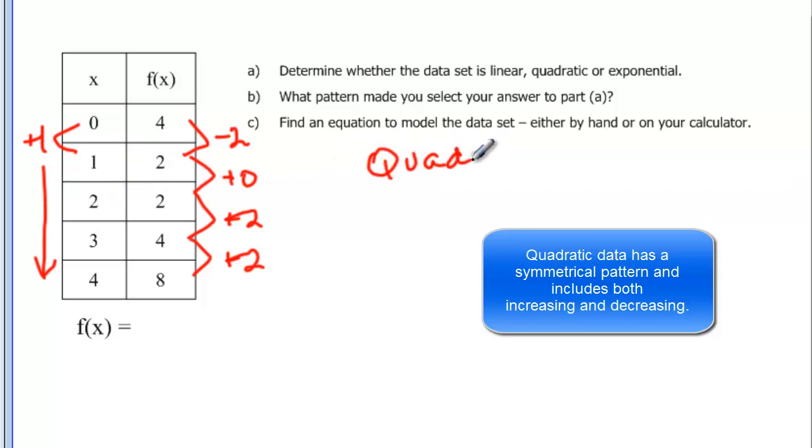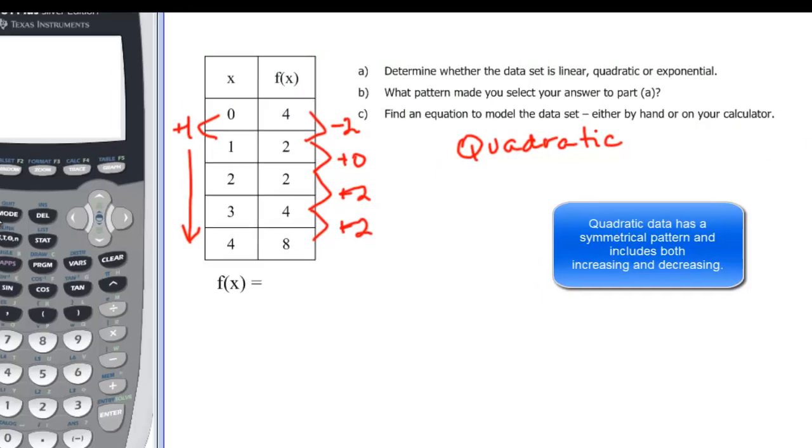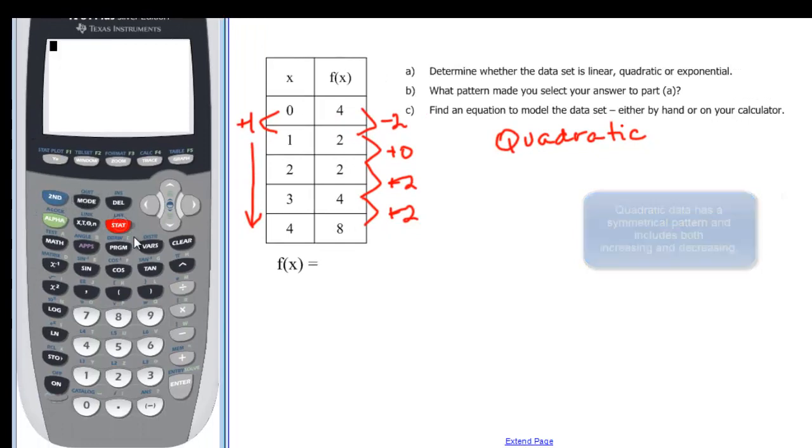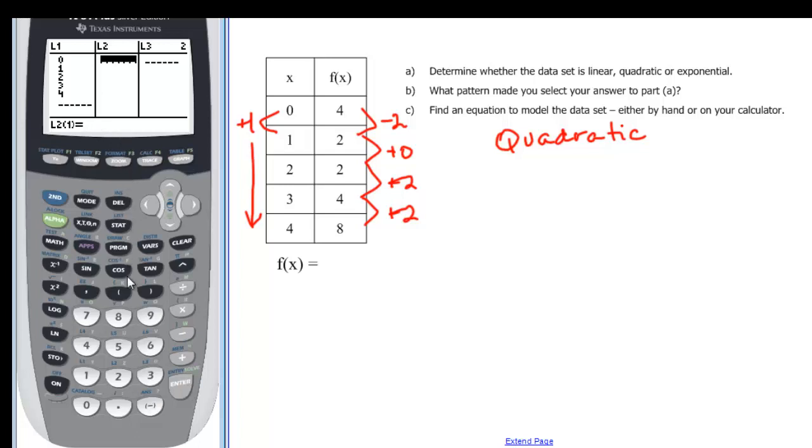Now quadratic, I can tell by looking at the pattern that it increases and decreases or decreases and increases, but I really have a hard time finding the equation by just looking at that table. The easiest way to do that is to go into my stats and just put my data in there. I've already put the x in there to save some time, but now I'm going to put in my y values or my f of x values.